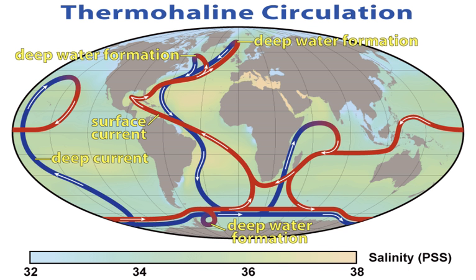Extensive mixing therefore takes place between the ocean basins, reducing differences between them and making the Earth's oceans a global system. On their journey, the water masses transport both energy in the form of heat and mass of substances around the globe. As such, the state of the circulation has a large impact on the climate of the Earth.